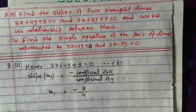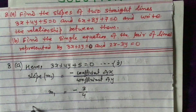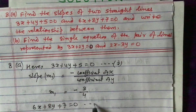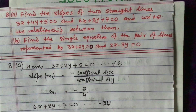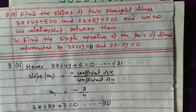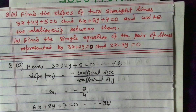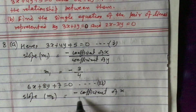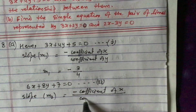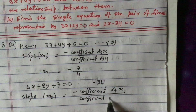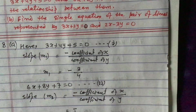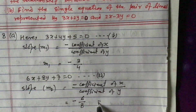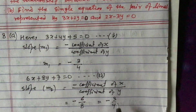Now let us find the slope of the other line. The second line is 6x plus 8y plus 7 equals 0 — let us call this equation 2. The slope m2 equals minus coefficient of x divided by coefficient of y, which gives minus 6 divided by 8. We can reduce this to minus 3 by 4.